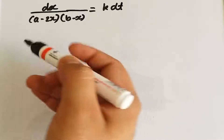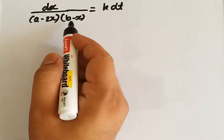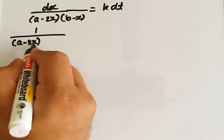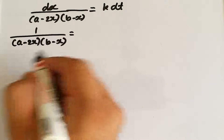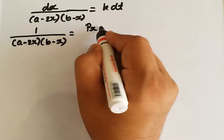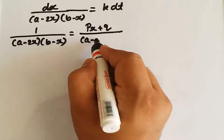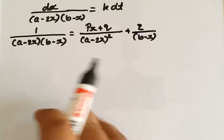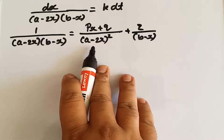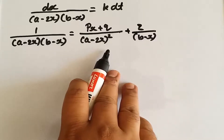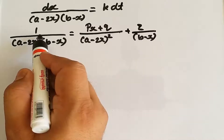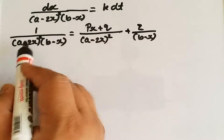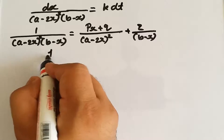We will separate the term 1/[(a − 2x)²·(b − x)] into partial fractions. We write: (px + q)/(a − 2x)² + z/(b − x). Multiplying both sides by (a − 2x)²·(b − x), the left side becomes 1, and the right side becomes: (px + q)(b − x) + z(a − 2x)².